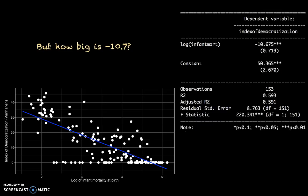But how can we interpret this minus 10.7? How much is that? We can see in the plot that the log of infant mortality ranges from about 1.5 to 5, which gives us some idea of how big a step of one is. We can see that the index of democratization goes from zero to 45, so minus 10 is about a quarter of that scale. But still, we don't exactly know what this minus 10 means.